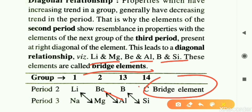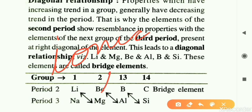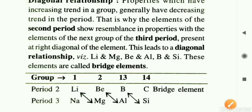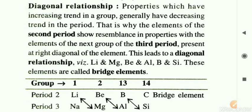The diagonal relationship is shown by bridge elements. The reason is related to their ionic radius — when these elements form ions, their atomic radii are similar. Because of similar ionic radii, there is a diagonal relationship. There is only a slight variation in values. You don't have to go into deeper details now; you will study this in more detail in class 11. That is all for the diagonal relationship.